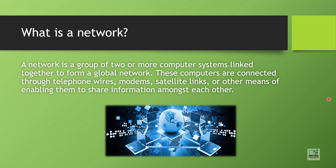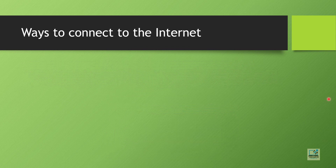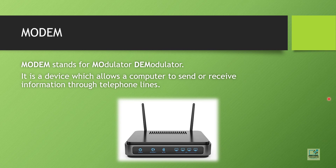Now how can we connect to the internet? The first way is to use a modem. What is a modem? Modem stands for Modulator and Demodulator — 'mo' from modulator and 'dem' from demodulator, so the word is formed using the initials of modulator and demodulator. A modem is a device which allows a computer to send or receive information through telephone lines.